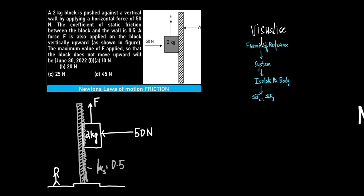A 2 kg block is pushed against a vertical wall with a horizontal force of 15 N. The coefficient of static friction between the block and the wall is 0.5. A force F is also applied on the block vertically upwards. The maximum value of F applied so that the block does not move upward will be determined.